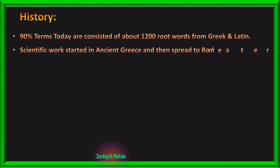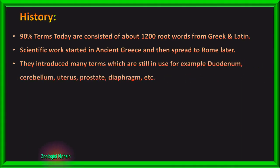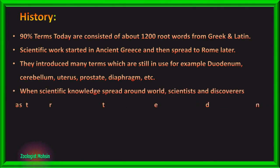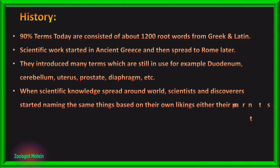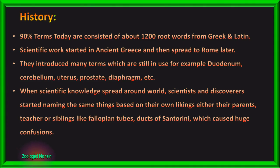Scientific work actually started in ancient Greece and then spread to Rome later. They introduced many terms which are still in use, for example, Cerebellum, Uterus, Prostate, Diaphragm, etc. When scientific knowledge spread around the world, scientists and discoverers started naming the same things in different countries based on their own likings — either their parents' name, teachers' name, or siblings' name — like fallopian tubes or ducts of Santorini, which caused huge confusion among scientists in different countries. Such terms based on personalities are called eponyms.